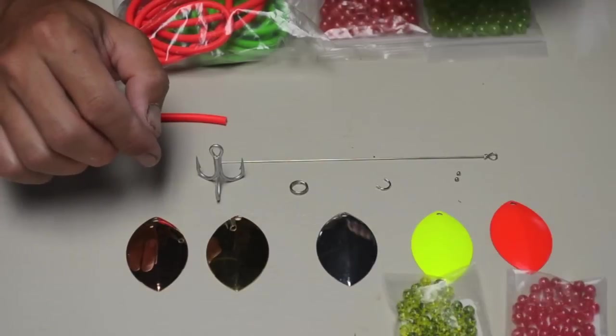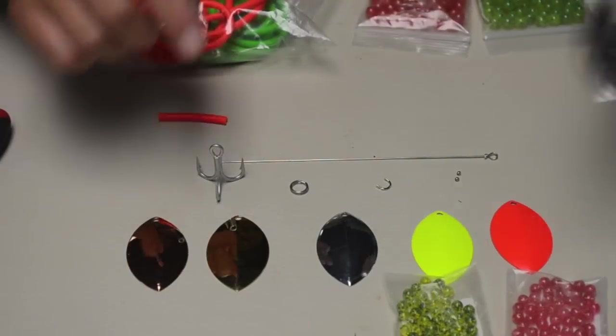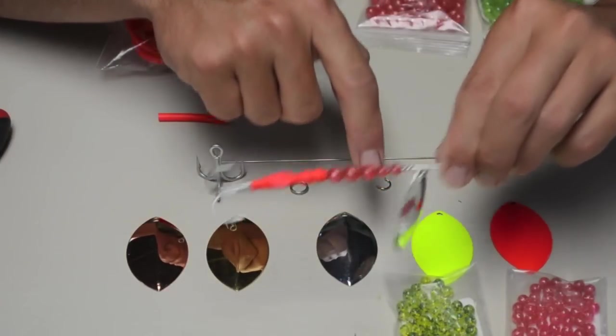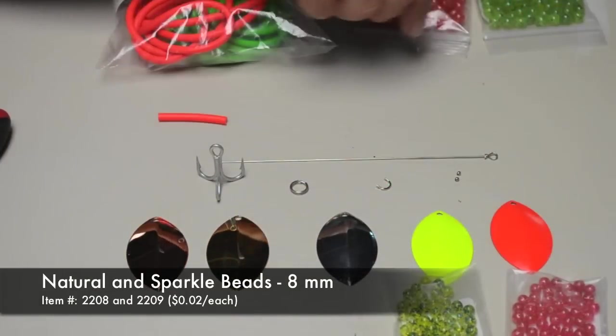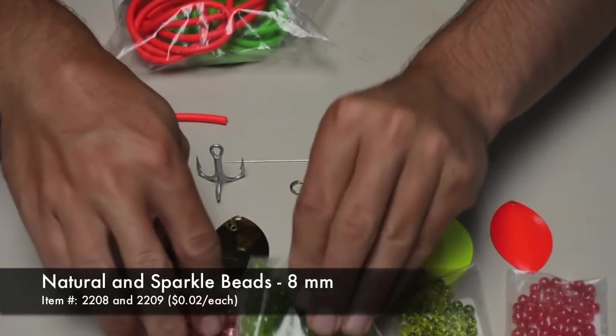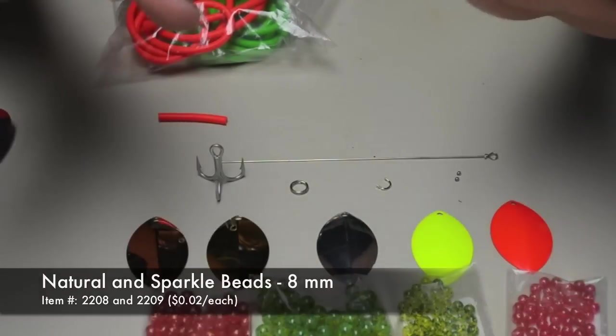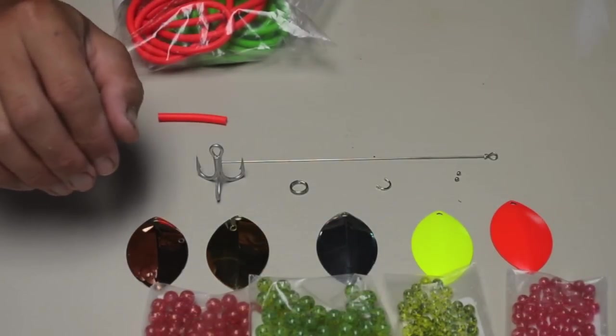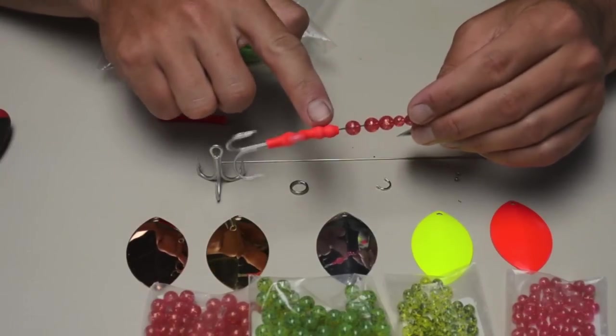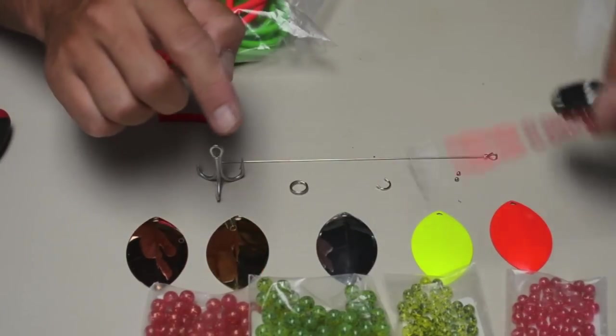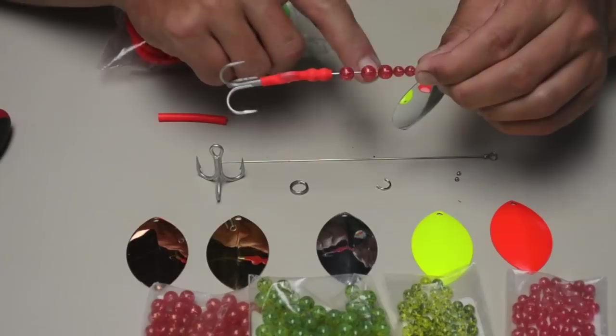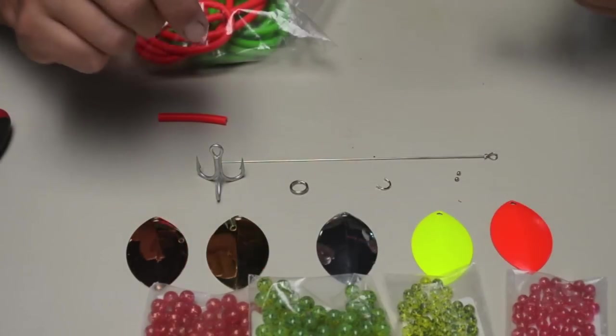Below those two beads, those two 6mm beads, I like to run three larger 8mm beads. I tend to use consistent colors but you can mix it up however you want. There's basically an endless variety of beads to choose from. And then I run two more 6mm beads underneath this surgical tubing here. So in total you're going to need four 6mm beads and three 8mm beads.